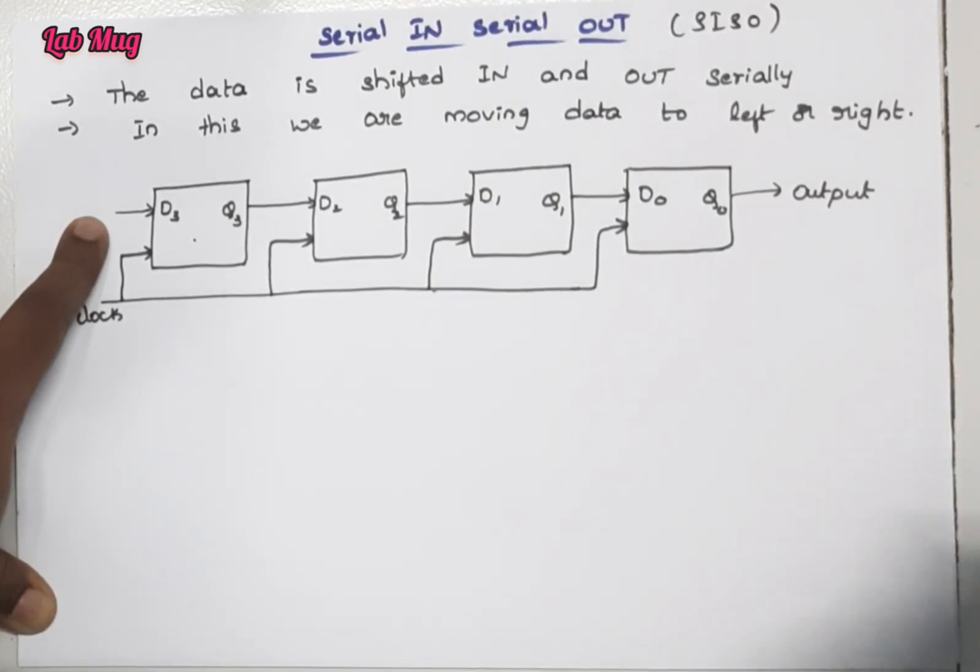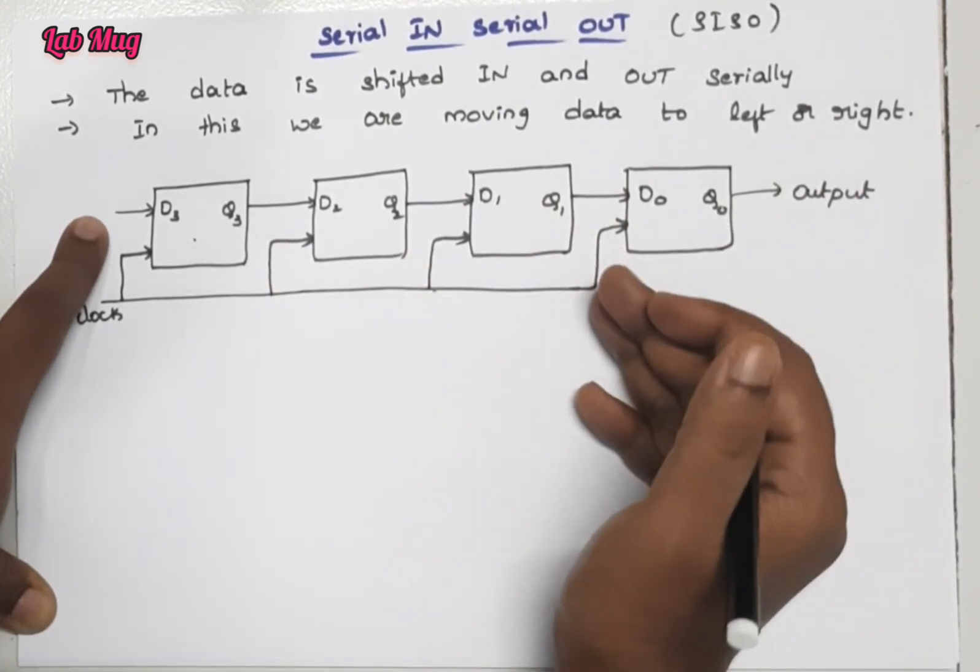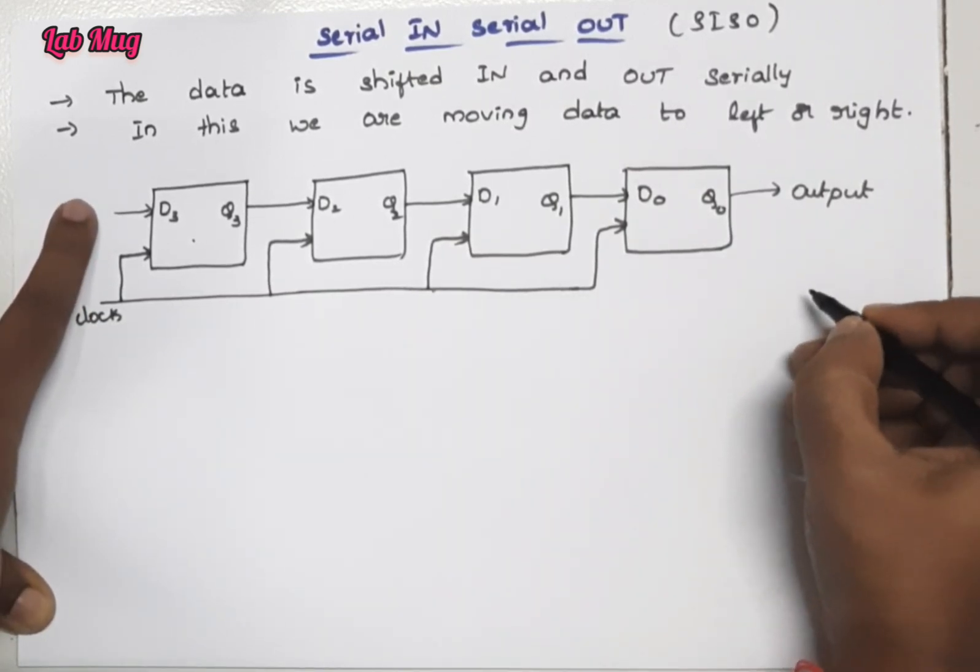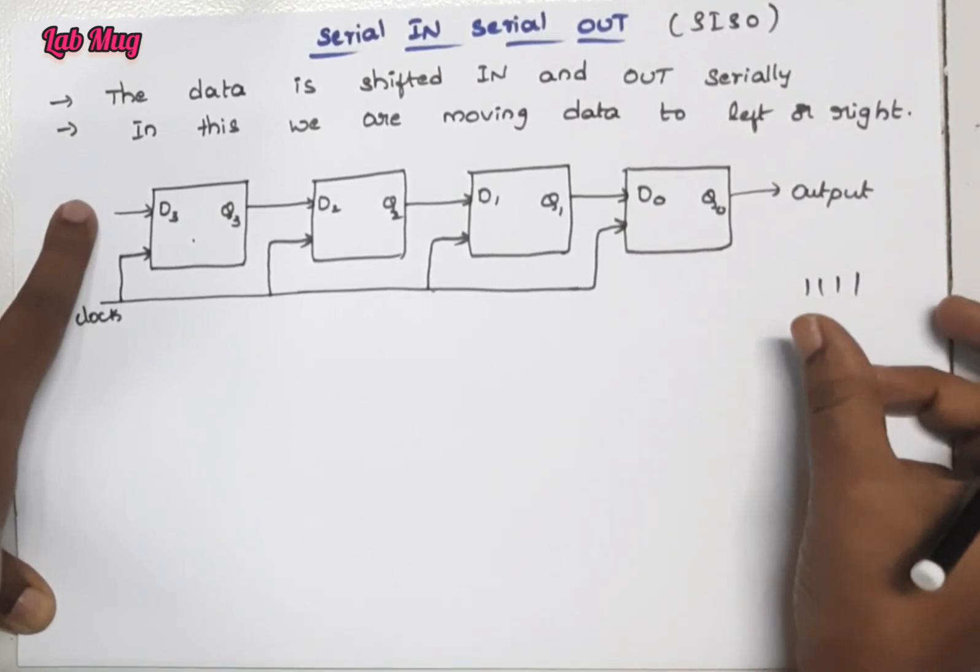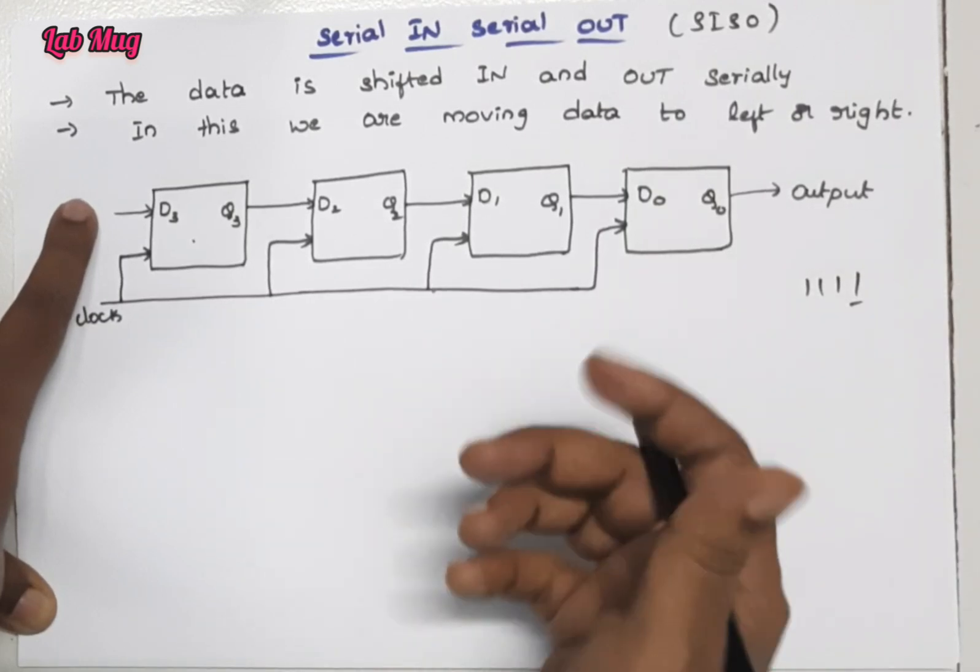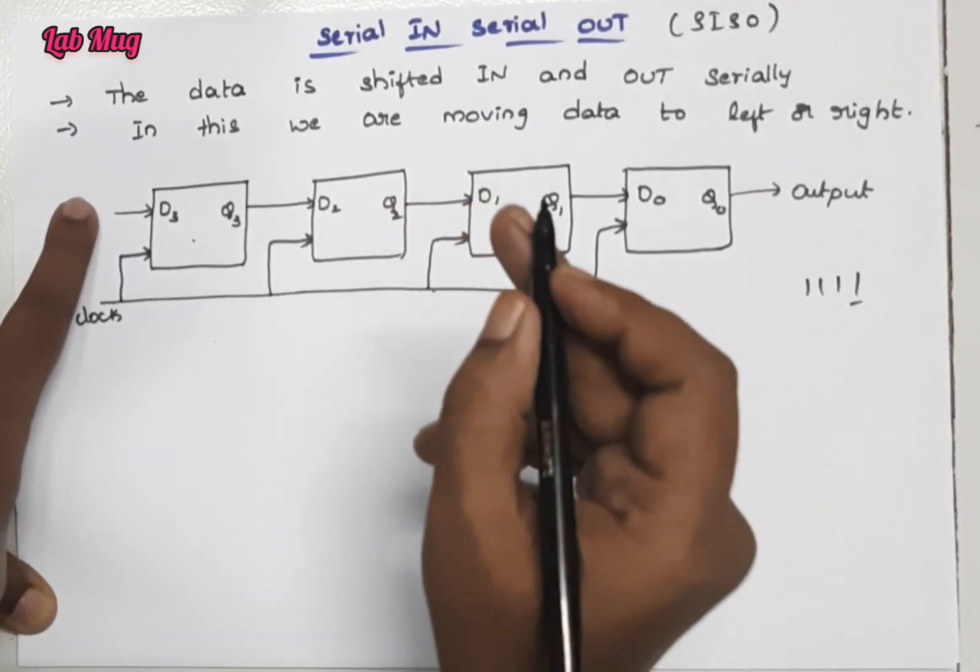For example, I want to store one one one one. In binary numbers, the rightmost is the most significant bit, so we get it from the right side.